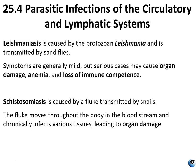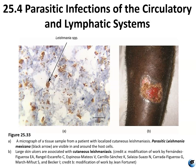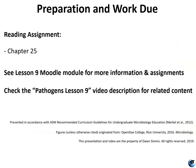Schistosomiasis is one of the most common parasitic infections in the world, caused by flukes in the genus Schistosoma. Although these parasites are not found in the U.S., people become infected worldwide. In terms of impact, this disease is second only to malaria as the most devastating parasitic disease. The fluke moves throughout the body and bloodstream, chronically infecting various tissues and leading to organ damage. The main cause is contamination of water supplies with human waste. Safe and effective medication — praziquantel, a prescription medication — is available, and treatment only takes one to two days. Figure 25.33 shows a micrograph of a tissue sample from a patient with localized cutaneous leishmaniasis, with parasitic Leishmania mexicana visible in and around the host cell, and a large skin ulcer associated with the disease.